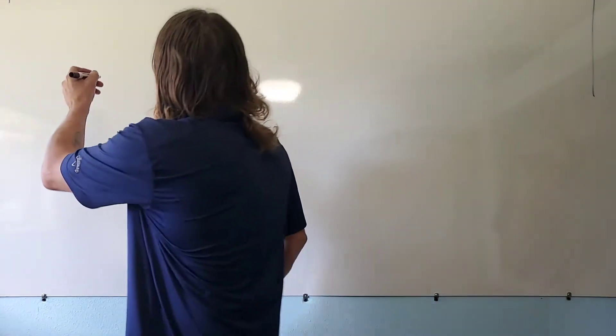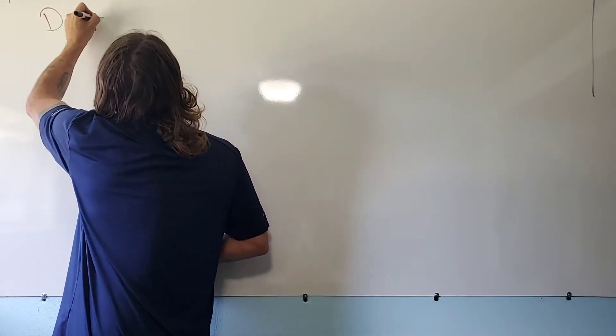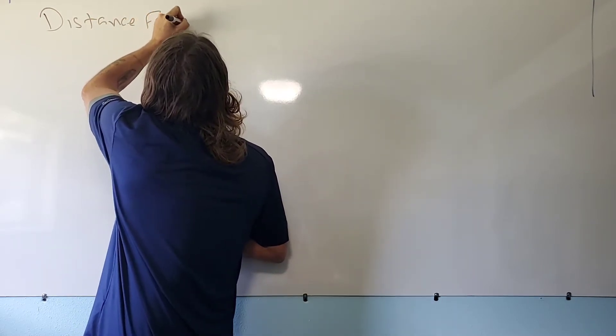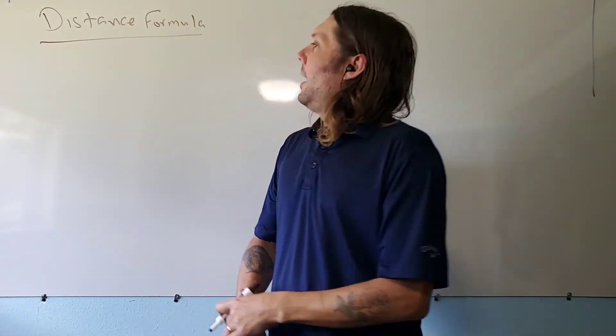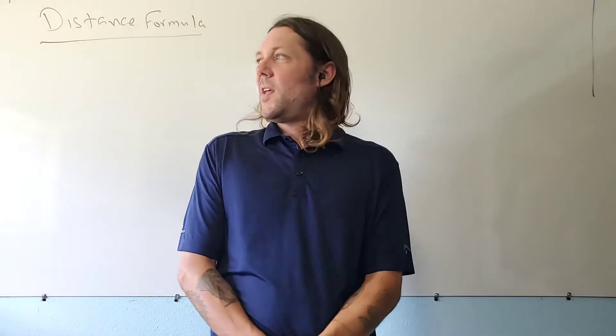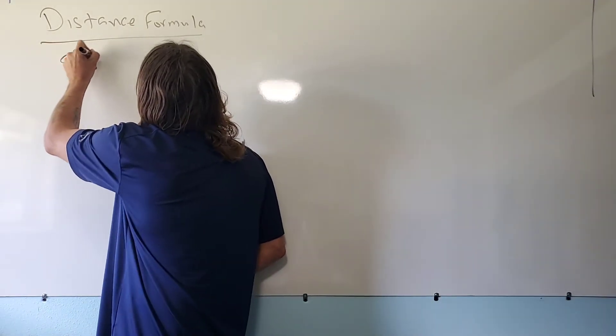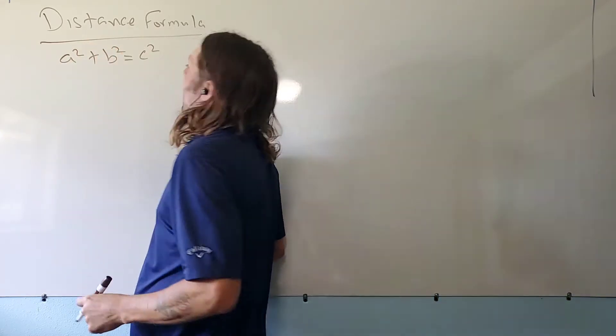There's only two formulas that we're working with. Our first formula is the distance formula, and we use this to find the diagonal length. It's this formula.